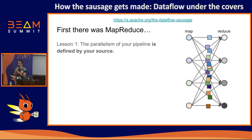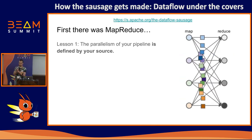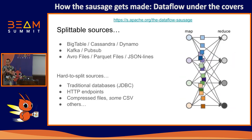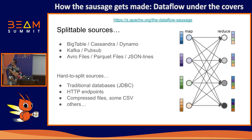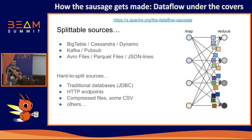When writing a Beam or Dataflow pipeline, it's good to remember that the parallelism of your pipeline is always defined by your source. If your source can provide a lot of parallelism, you'll be able to execute a highly parallel pipeline. Sources designed for this include range key-value stores like Bigtable, Cassandra, and Dynamo — they have APIs that give you key ranges to read in parallel. Kafka partitions are designed to be consumed in parallel. Avro and Parquet files have multiple blocks that different workers can consume in parallel.